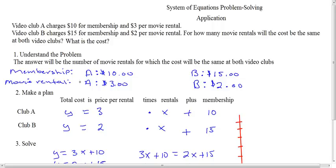And movie rentals, here we're looking at how much they charge per movie. Club A charges $3 per movie, and Club B charges $2 per movie. So now we want to make a plan. And inside our plan, we just really want to set up a sentence. And my sentence is total cost is price per rental times rentals plus membership. And with this sentence, I'm going to create an actual equation.